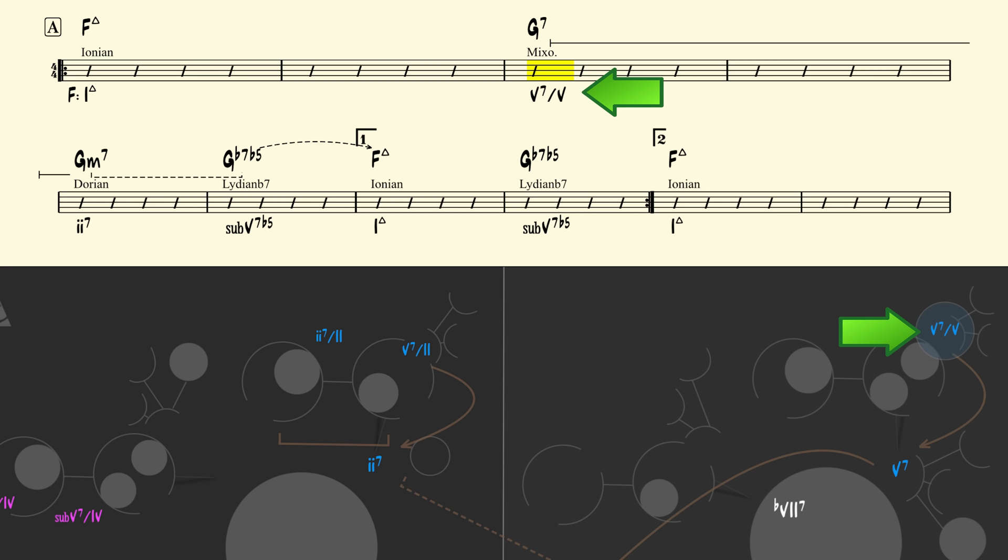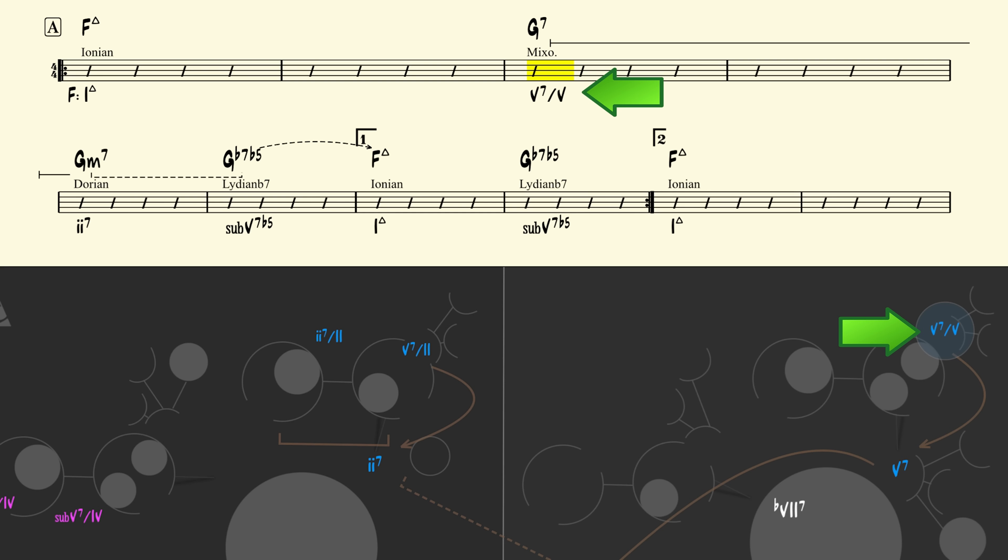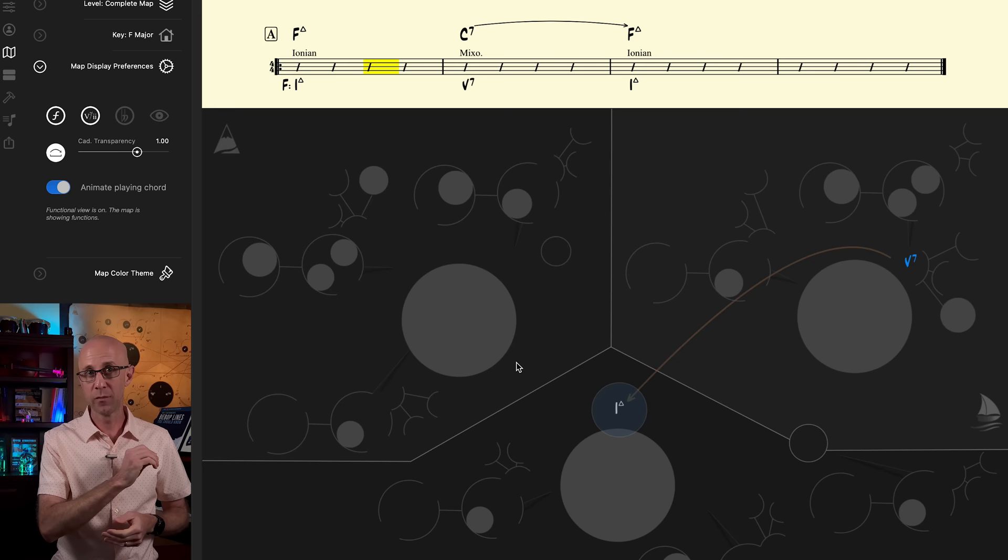At first glance, the G7 in measure 3 might seem like a 5-of-5. In fact, the 5-of-5 is a great chord to use when targeting a 2-5 progression, which is just a 5 chord that's been embellished with an interpolated 2 chord right before it. Let's take the example of the key of F major. The C7 chord is the 5-7, and we can target it with its 5 chord, which is G7.